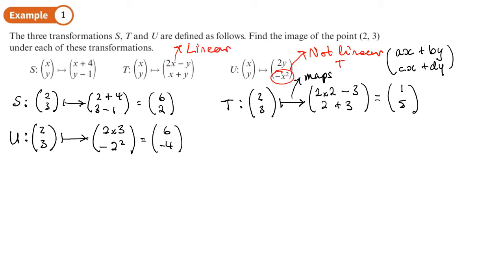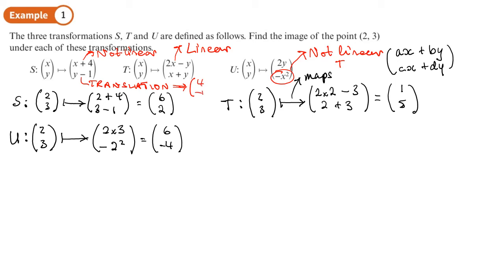For S, there are no squares either, so it may look linear. But the test is: does the origin map to itself? If x = 0 and y = 0, the top (x-coordinate) ends up at 4, and the bottom (y-coordinate) ends up at −1. So starting at (0, 0) gives (4, −1) — S is not a linear transformation. It looks like some sort of translation, and a translation is not a linear transformation in the matrix sense.